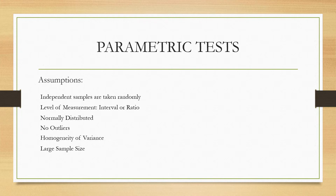The advantage of the parametric test is that it is more powerful, meaning it has more statistical power — less likely to make a Type 2 error, meaning failing to reject a null hypothesis when in fact the null hypothesis is false.